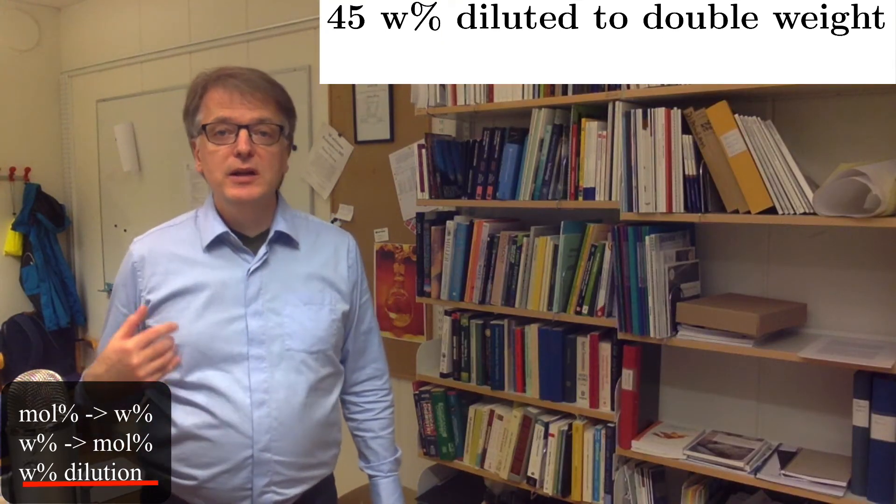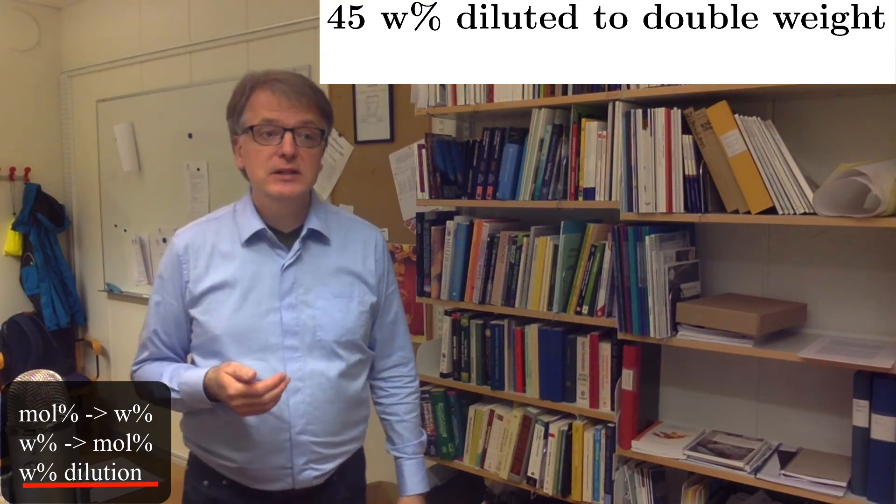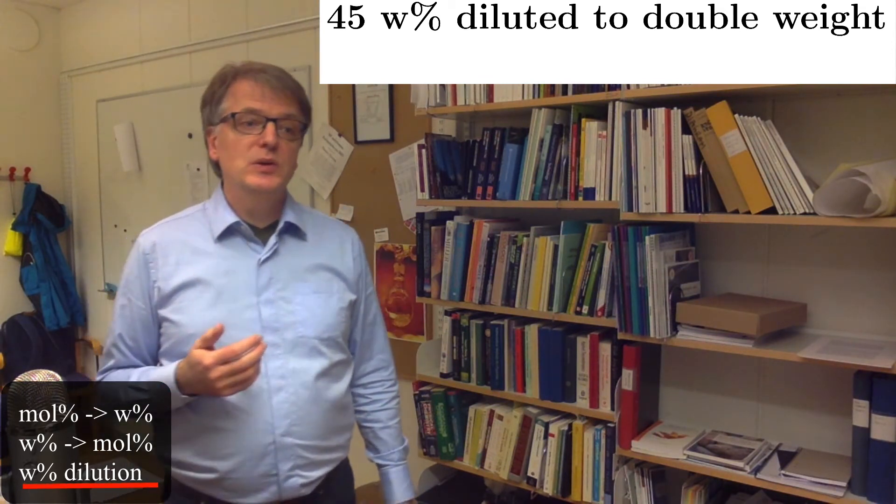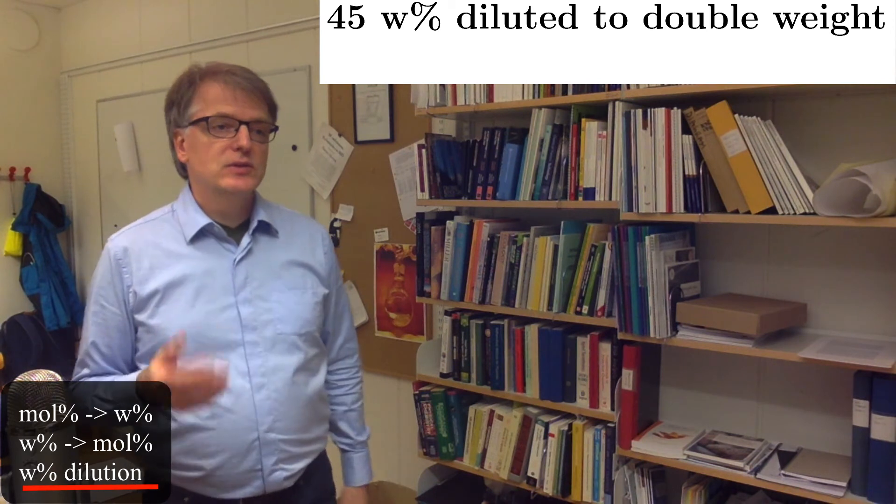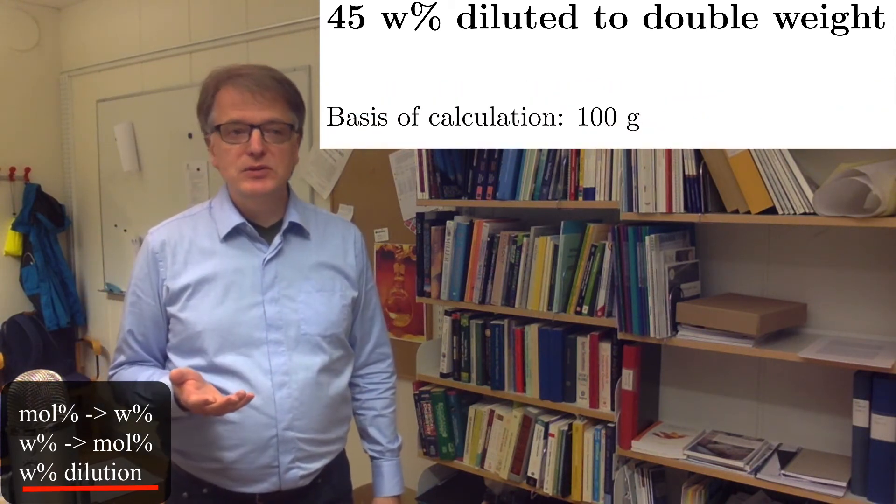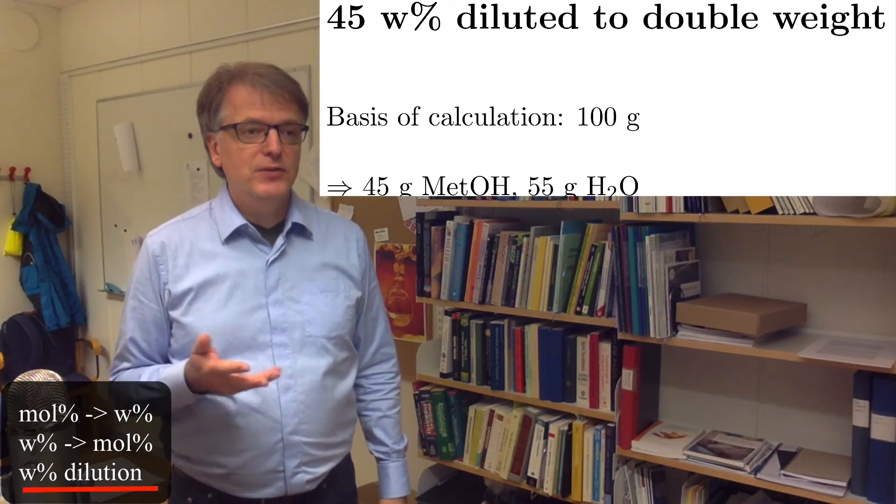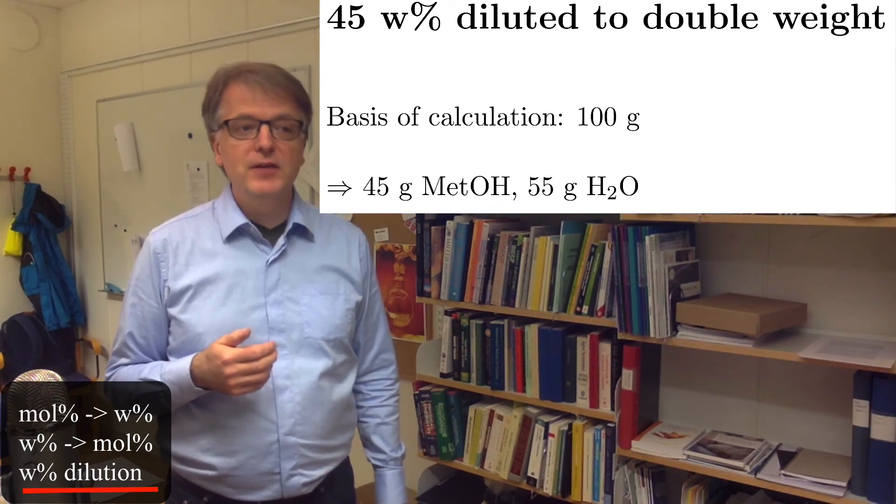And finally, the last one. We start with 45 weight percent of methanol and we dilute to double weight. So, we add more water. Let's use basis of calculation 100 grams to start with. So, we still have 45 grams methanol and 55 grams of water.